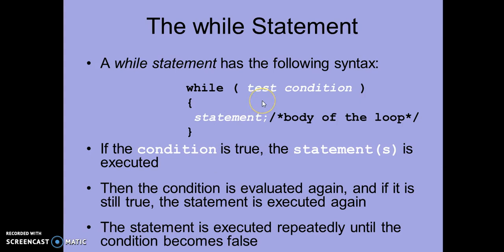Initially the condition is tested. If the condition is true, the body will be executed and the statements written inside the body of the loop are executed one by one. Once the body is executed, the condition is tested again and the process will continue to execute the body of the loop unless the condition is false.